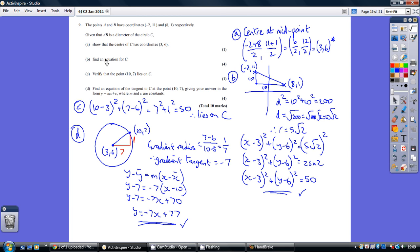So, part B, find an equation for the circle. What we need for that, we need to know the centre of the circle, which we have, and we need to know the radius. So, to work out the length of the radius, we first of all have to work out the length of the diameter, so basically work out the length from this point to this point.